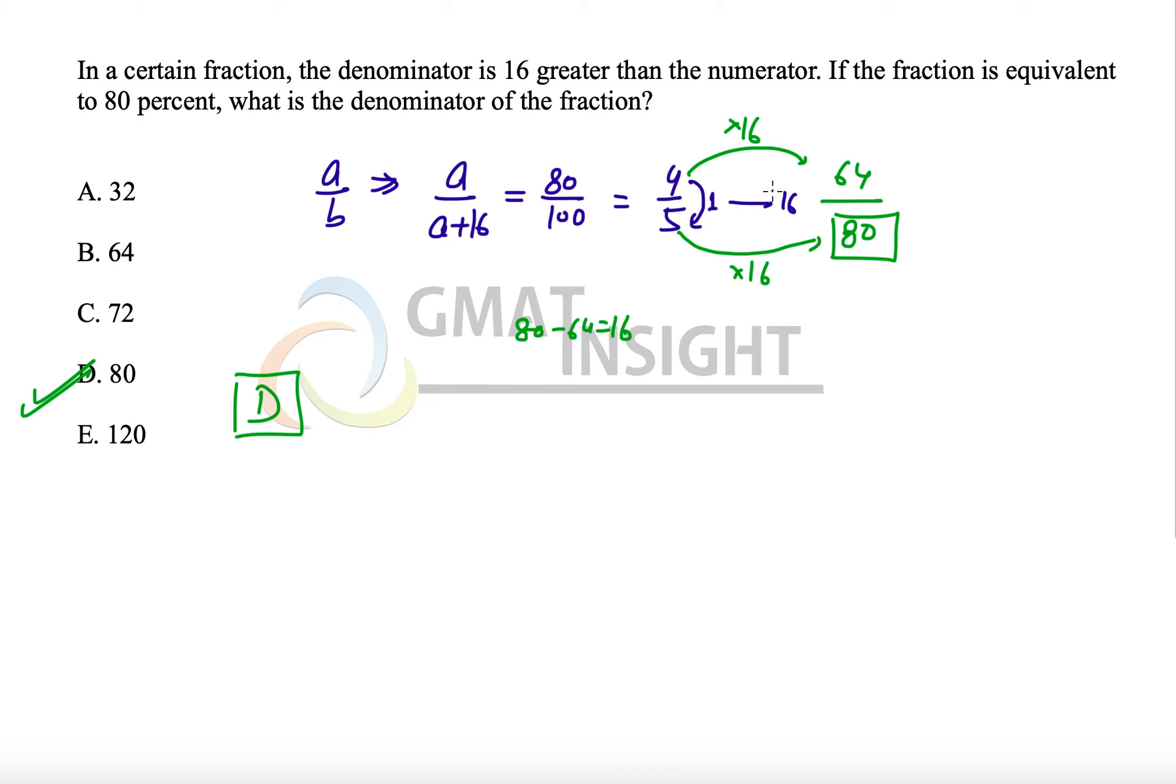I hope you can understand now that first of all we see the difference, and whatsoever difference is needed, we simply find out what factor needs to be multiplied with both numerator and denominator to get that difference between the numerator and denominator.